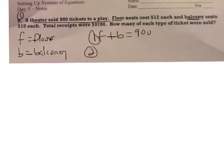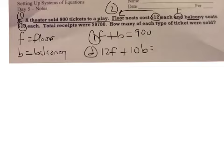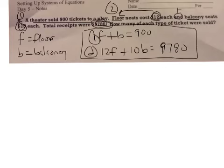Our second one, this is what we call a money statement, where you put all the money together in one sentence. Here we have 12 goes with floor, and means add, 10 goes with balcony. And that equals the other money, which is $9780. What you can see is that we put all our money together. We like to say money, money, money. And that one is done.